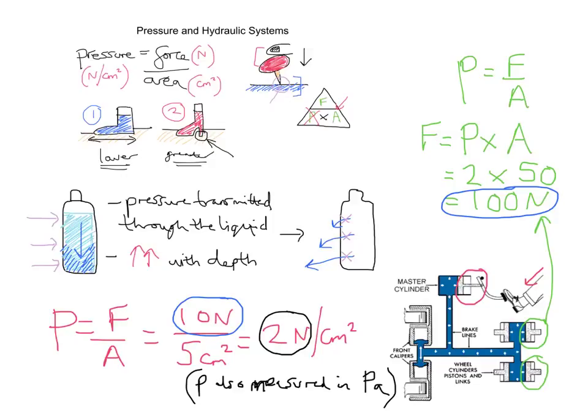So we're looking at the equation P equals F divided by A — pressure equals force divided by area. We keep pressure constant and change the area to generate a different force. I hope all that helps, thank you.